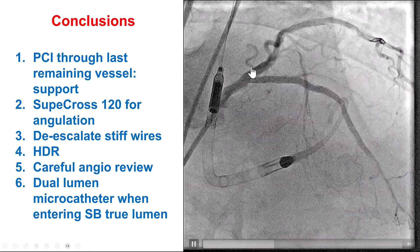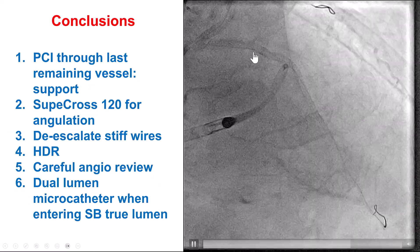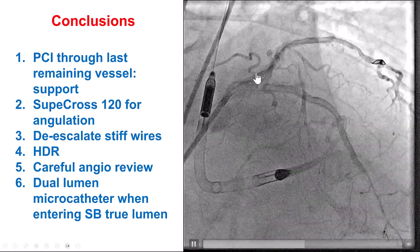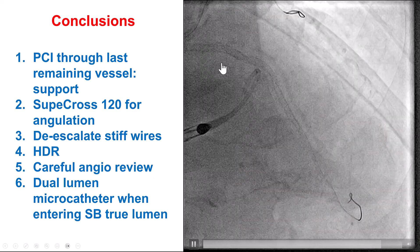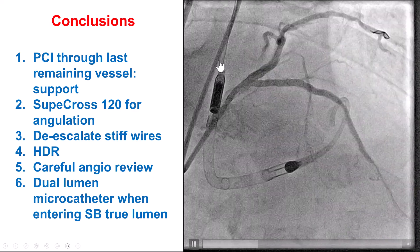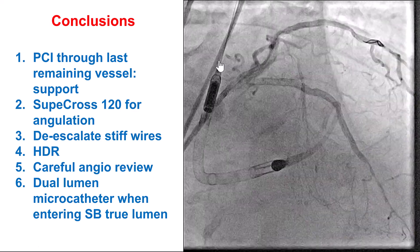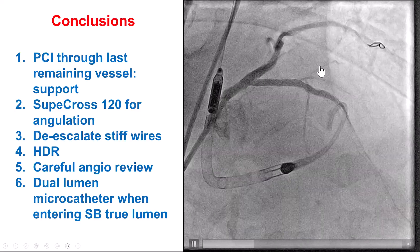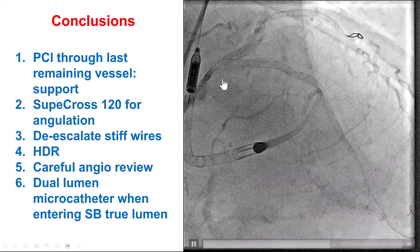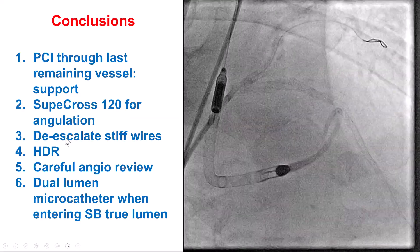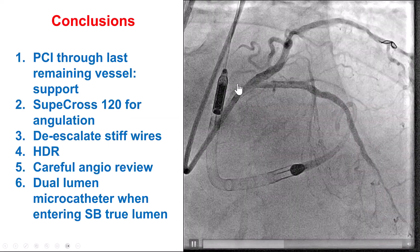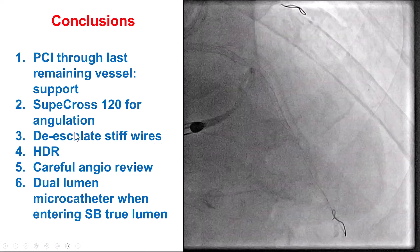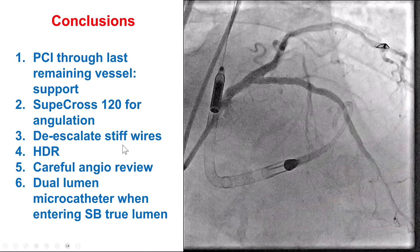There are multiple lessons from this case. The first is that when doing PCI through the last remaining vessel, hemodynamic support is important. In this patient, every time a balloon was inflated in the circumflex or the left main, the patient had essentially no pulsatility — but the patient's mean pressure remained stable throughout the procedure with the Impella CP support. Second, when there is angulation, an angulated microcatheter like the Supercross 120 can help direct the guide wire.